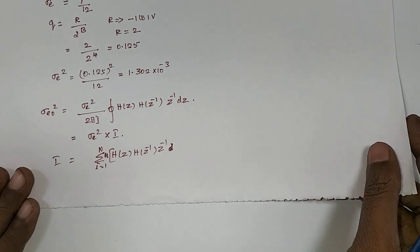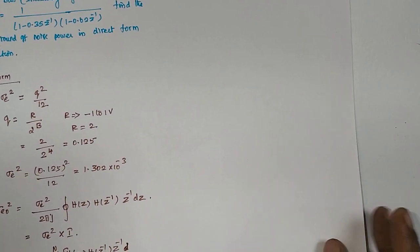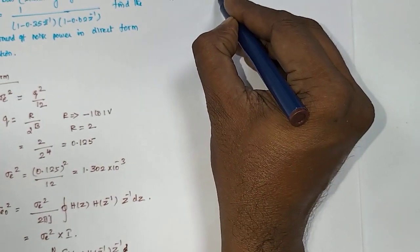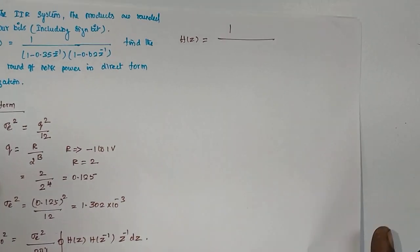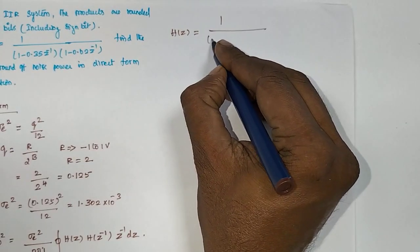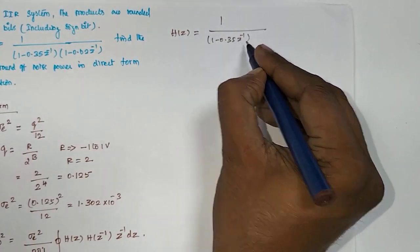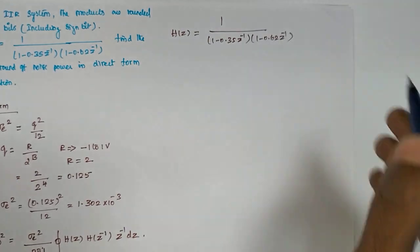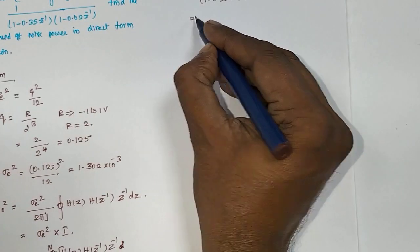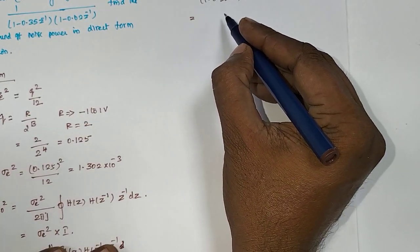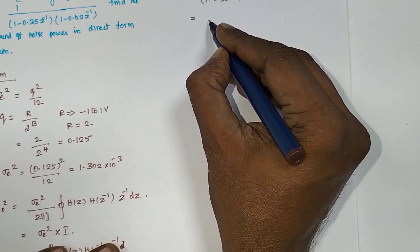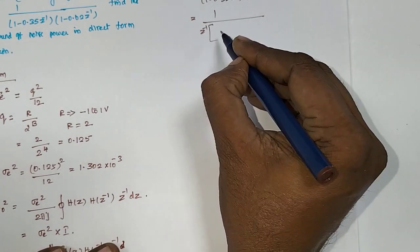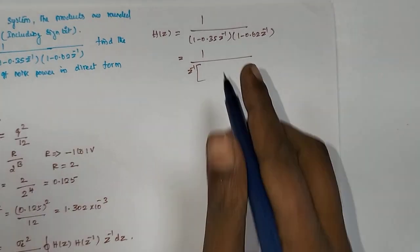From the equation, H(z) is 1 divided by (1 minus 0.35 z⁻¹)(1 minus 0.62 z⁻¹). Taking z⁻¹ common outside the factors gives an expression in terms of z.